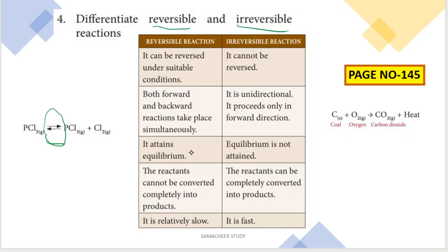A reversible reaction attains chemical equilibrium, whereas in an irreversible reaction, equilibrium is not attained. Also, in a reversible reaction, the reactants cannot be converted completely into products.